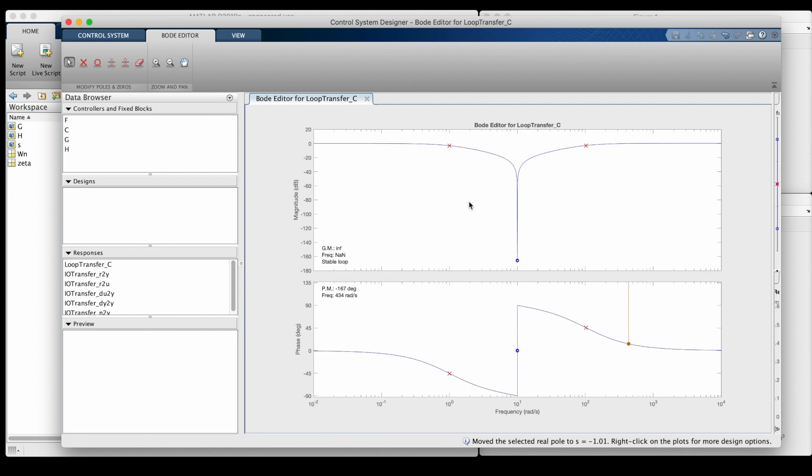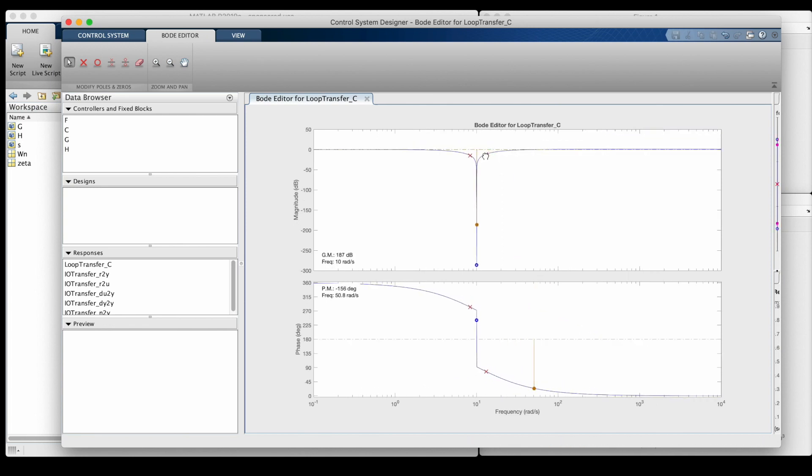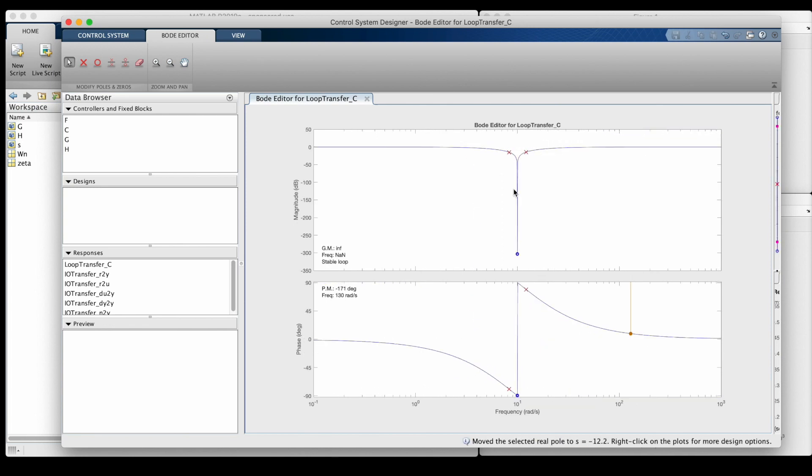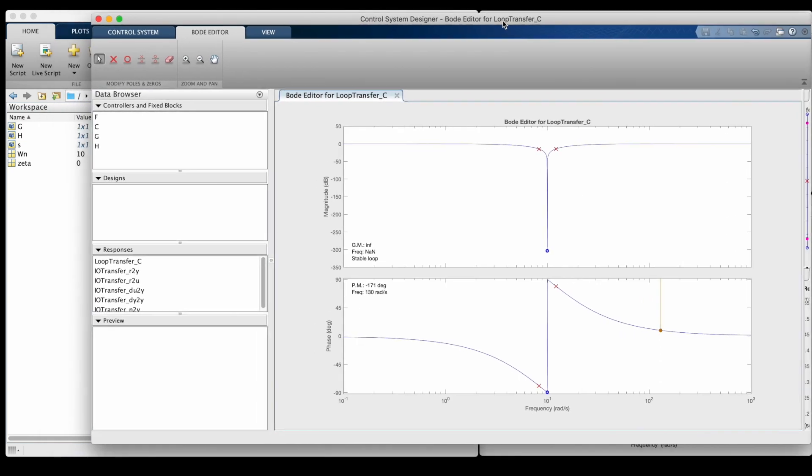And to make the notch narrower, we can move both poles inward. In this way, we have control over the width of the notch without changing the notch location, or affecting the low and high frequency gain.